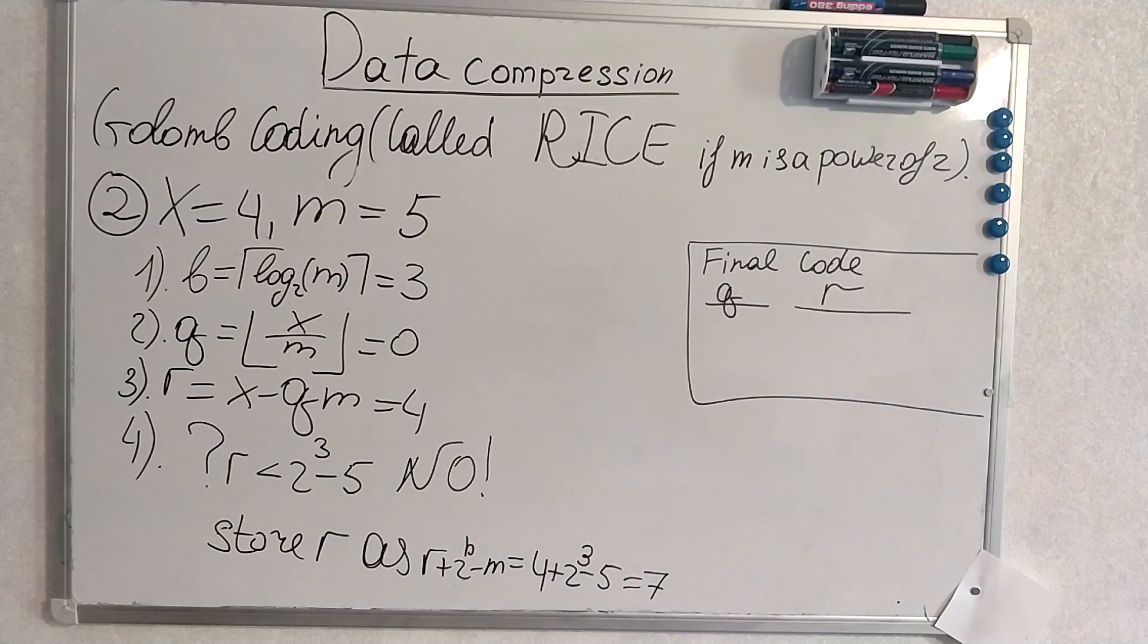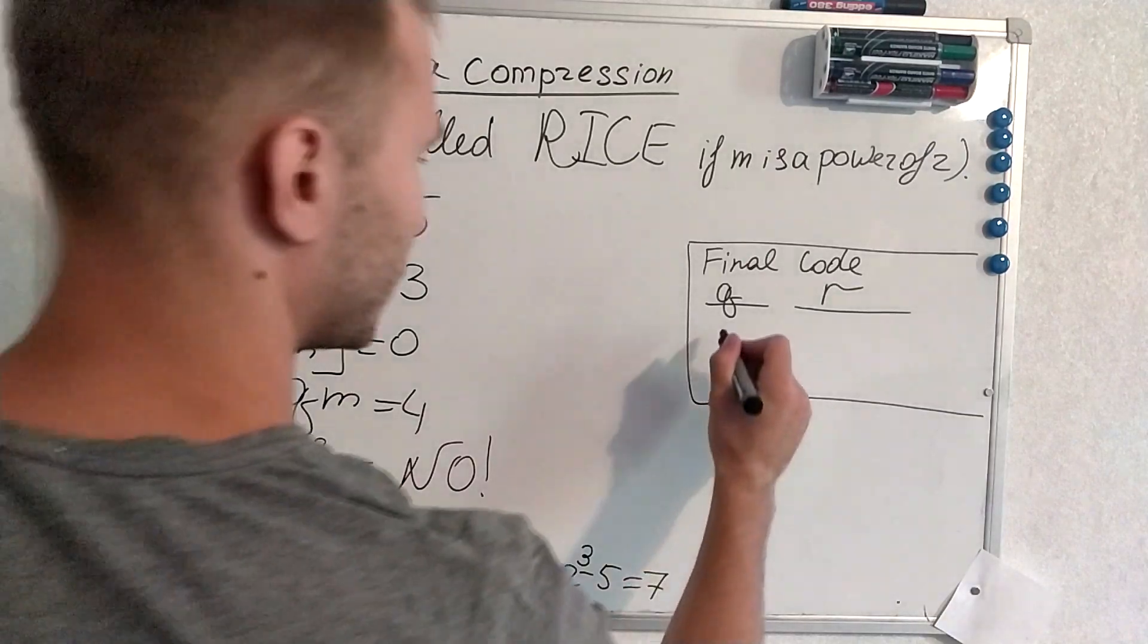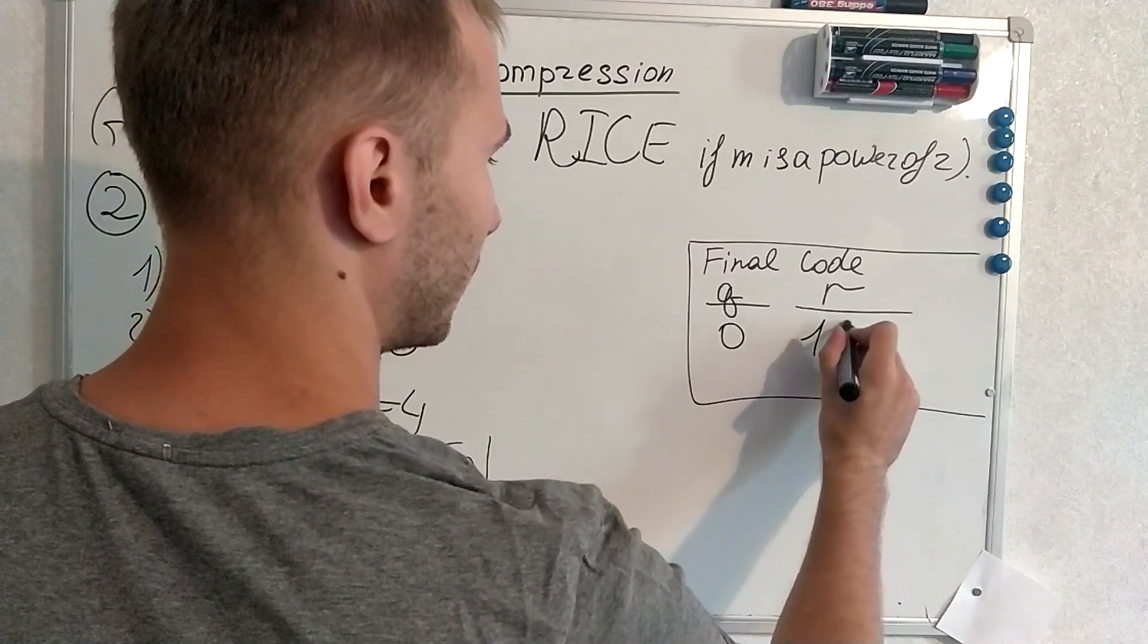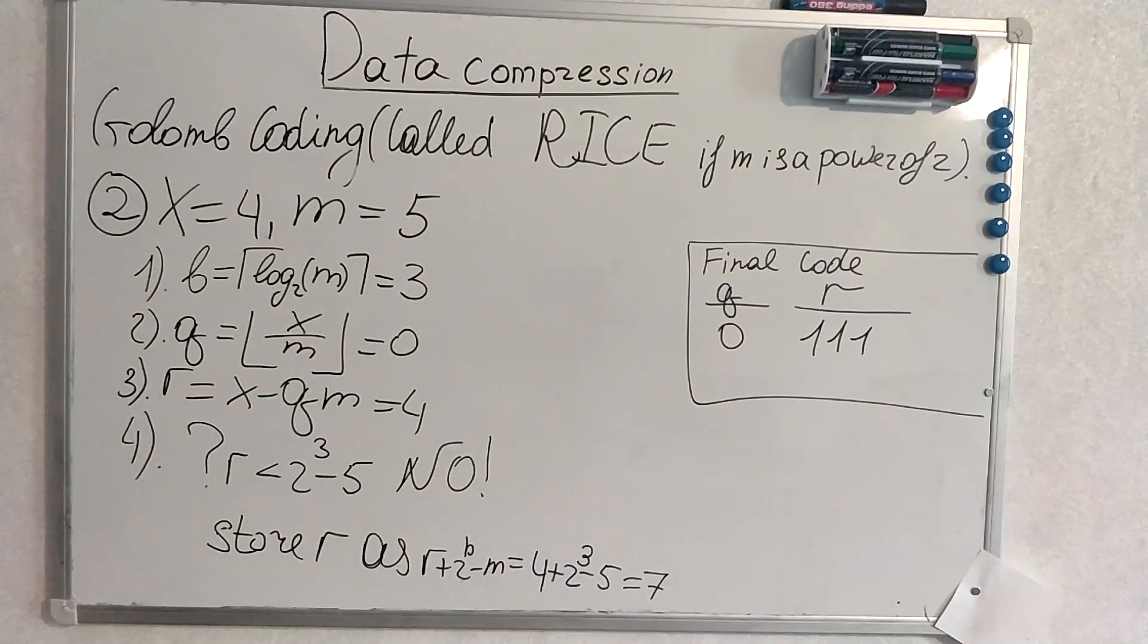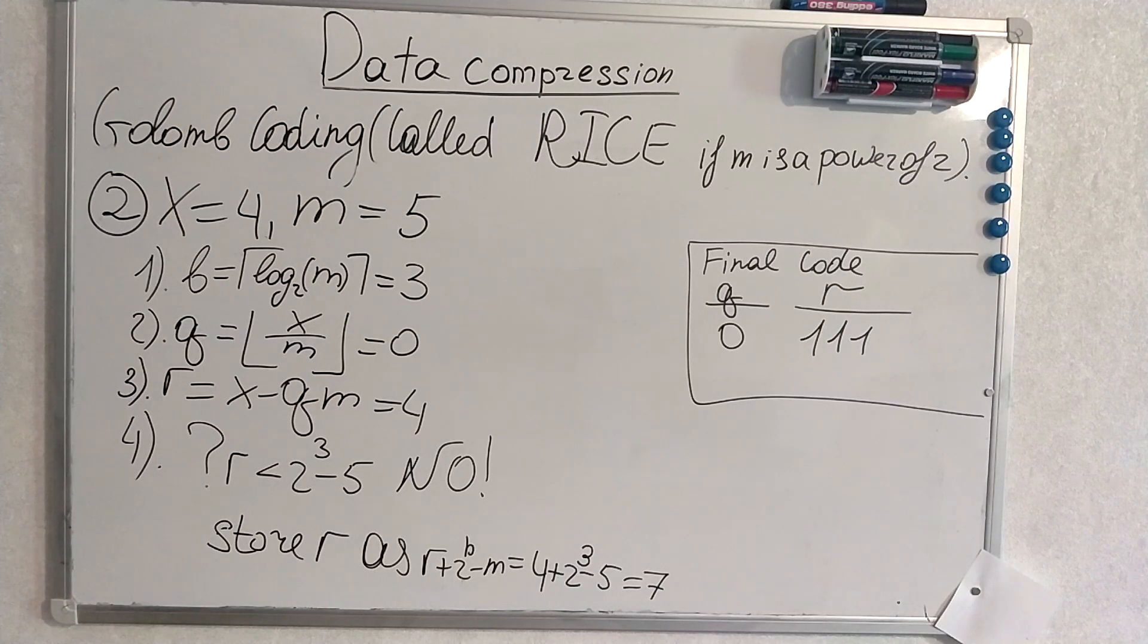And we make our decision according to that. So we store r as this number. Once again formula for your simplicity. And try to produce the final code by yourself. But I will give you it in any case. So q is 0 and r is 7 in binary in length of 3. And that's actually it. That's all about encoding. Now we will go to the decoding of the algorithm.